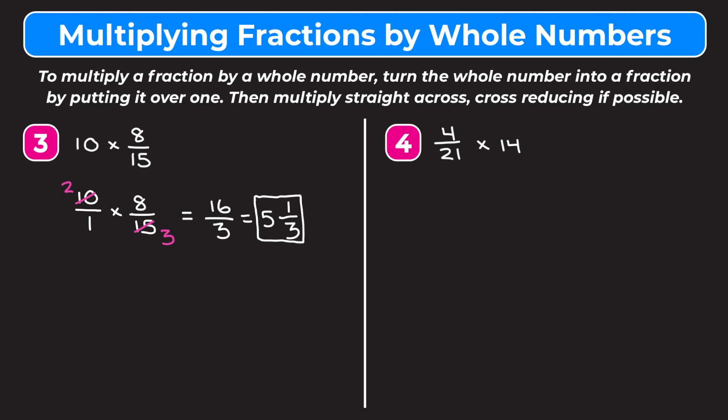The last example is four twenty-firsts times fourteen. We keep four over twenty-one as it is and change fourteen into fourteen over one. We can cross reduce fourteen and twenty-one by dividing them both by seven: twenty-one divided by seven is three, and fourteen divided by seven is two.